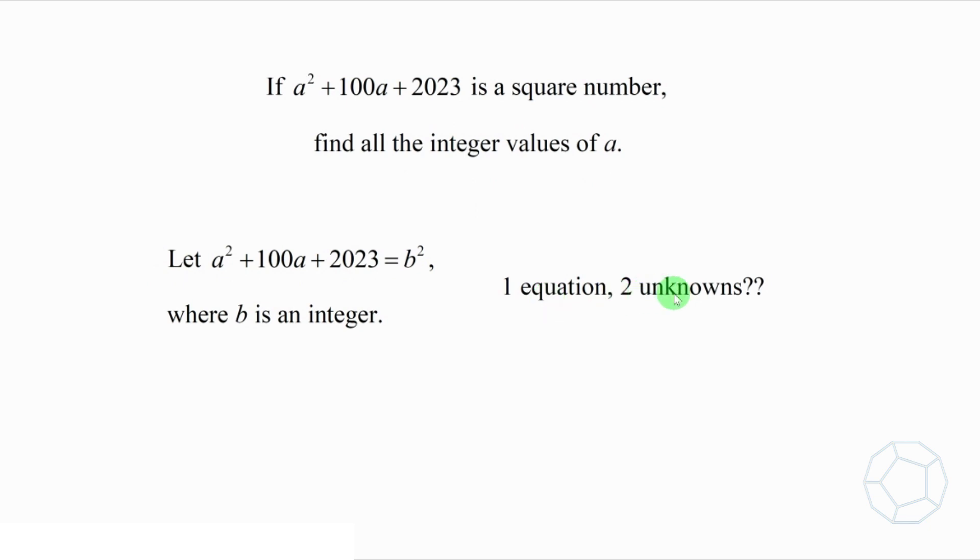Now, we have a single equation, but two unknowns a and b. How can we solve it?